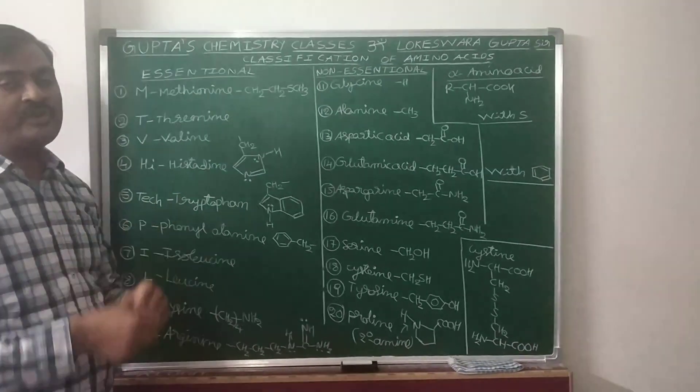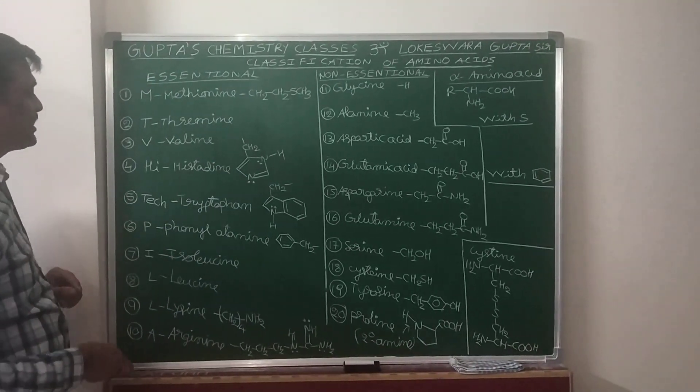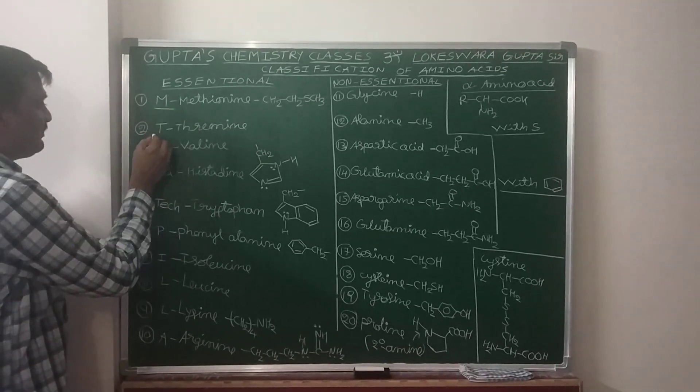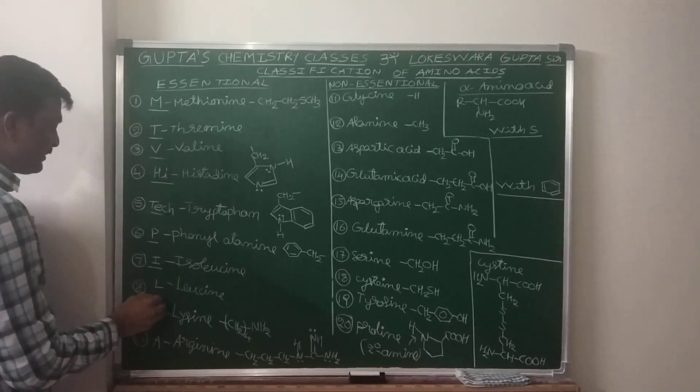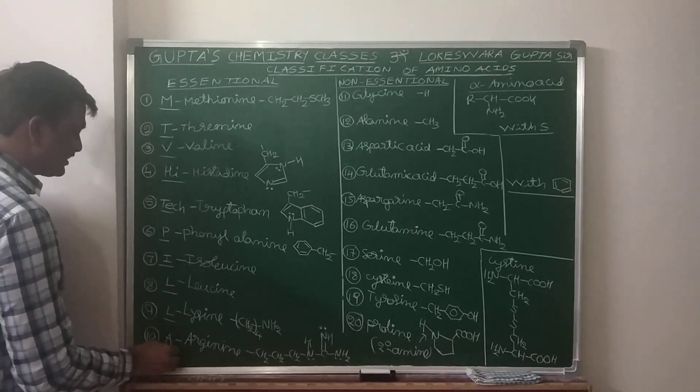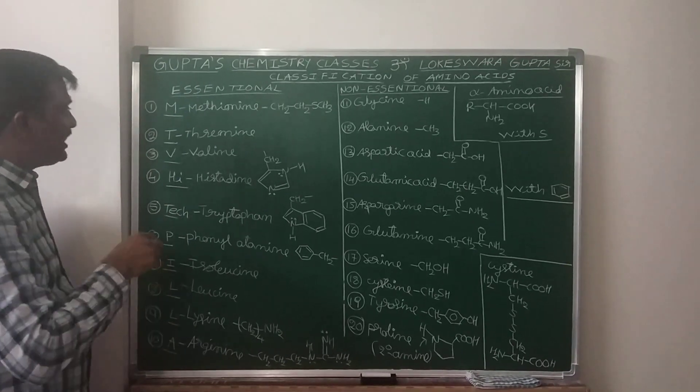Now, here you will feel difficult to remember this 10 and that 10. That's why I am going to give a shortcut. You remember this 10 essential amino acids with the shortcut: MTV high-tech pillar. Which TV pillar? MTV, not G-TV, not E-TV. MTV high-tech pillar.